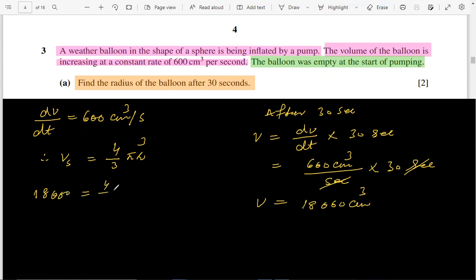Now putting the value of volume here, 18,000, that is equal to 4/3 π r³. So r³ is 18,000 times 3 over 4π. So finally radius will be the cube root of 18,000 times 3 over 4π.